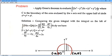C is the boundary of the area enclosed by the x-axis and upper half of the circle x² + y² = a².